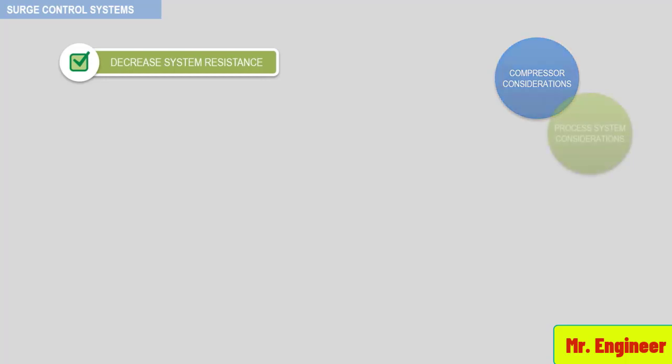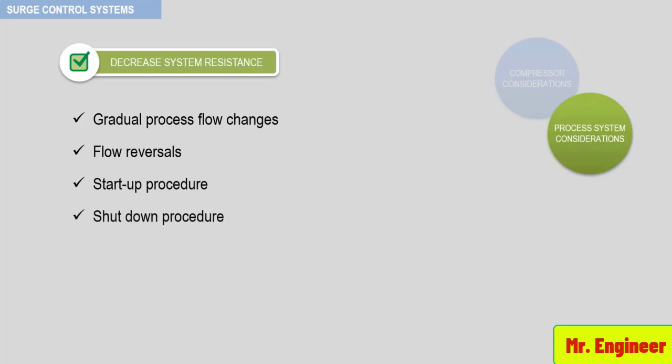Process system considerations include gradual process flow changes, flow reversals, startup procedure, and shutdown procedure.